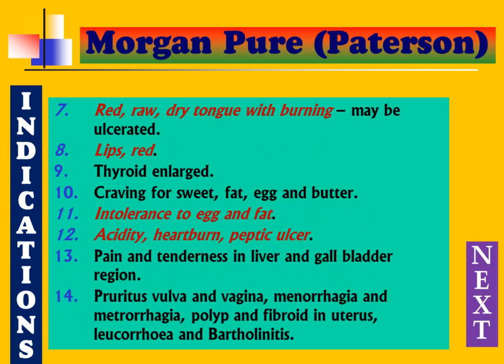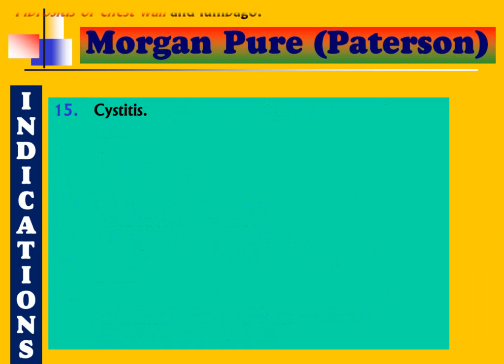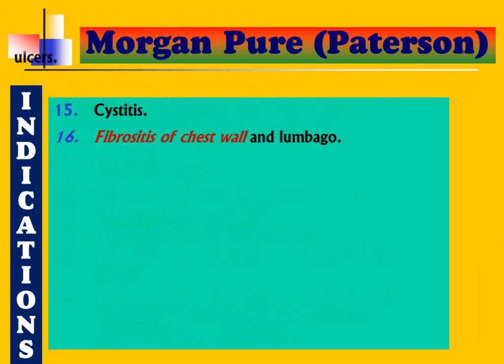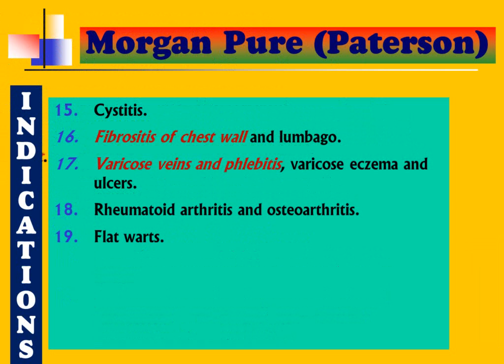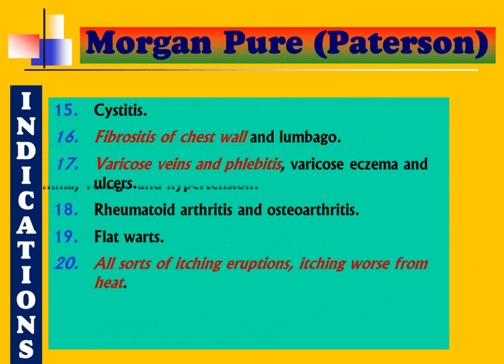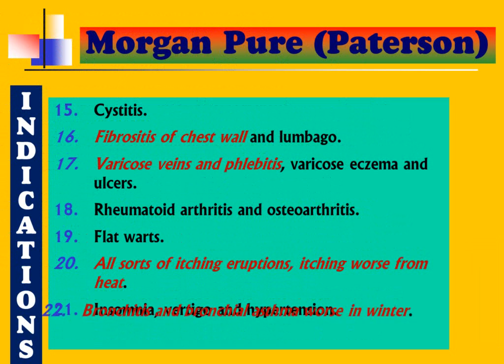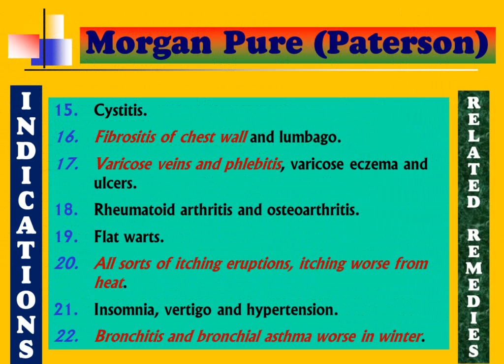Further symptoms of Morgan Pure Patterson: pruritus of vulva and vagina, menorrhagia and metrorrhagia, polyp and fibroid in uterus, leucorrhoea and bartholinitis. Cystitis, inflammation of the bladder, fibrositis of chest wall, chest with lumbago, varicose veins and phlebitis, varicose eczema and ulcers, skin problems associated with varicosities. Rheumatoid arthritis with osteoarthritis, flat warts, all sorts of itching eruptions worse from heat — a common feature of Morgans.